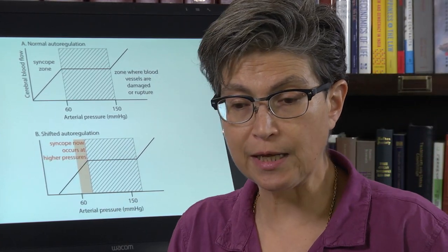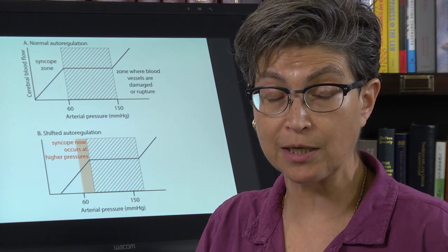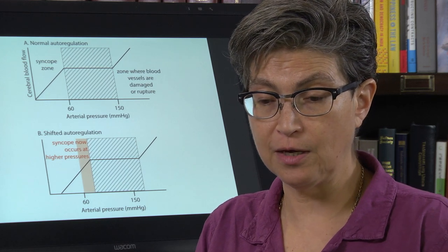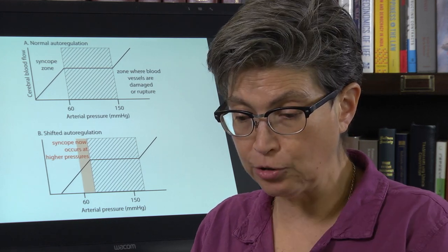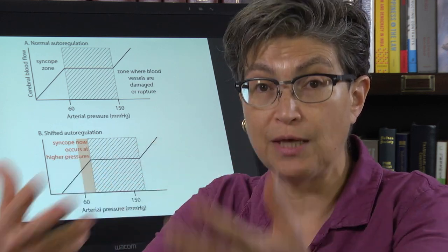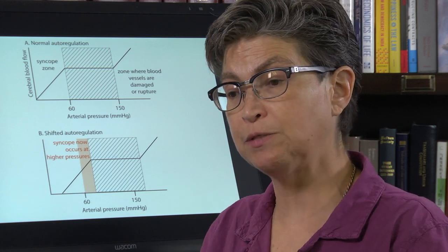And I just want to say a word about the mechanisms of autoregulation. There are two main mechanisms. One is myogenic. If there's a low blood flow to an area, the blood vessels dilate to then increase the amount of blood going to that area. And the other one is metabolic.